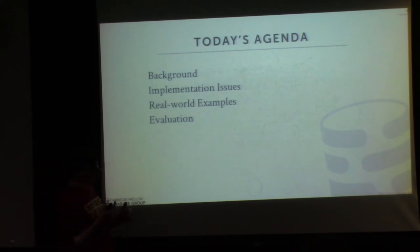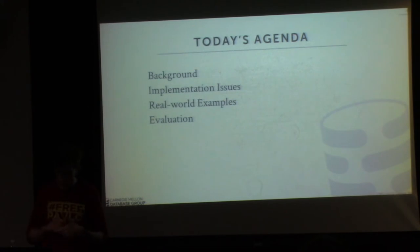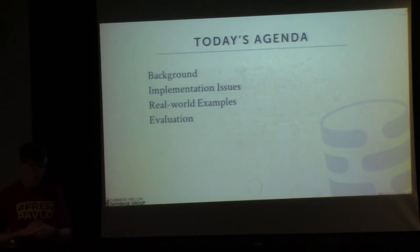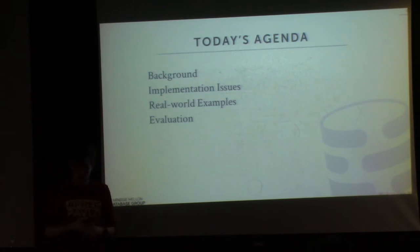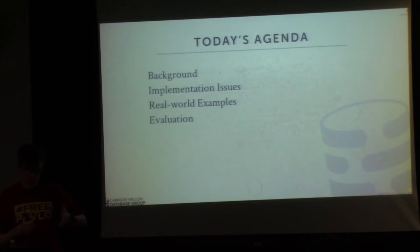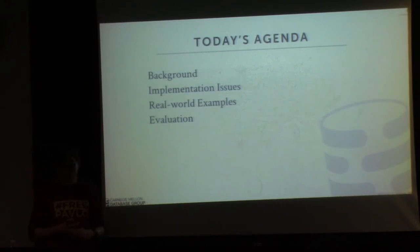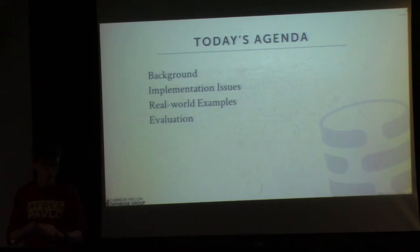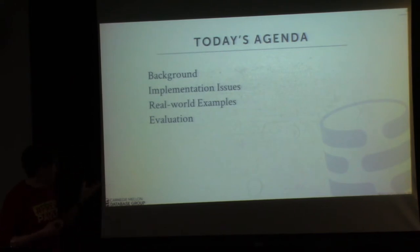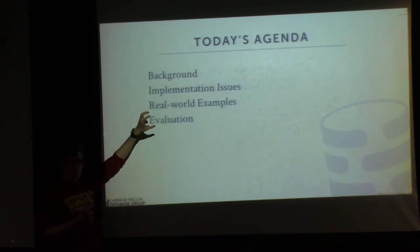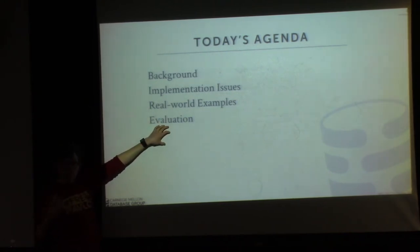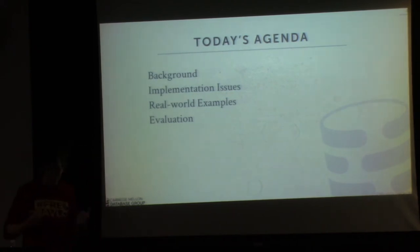I'll start with some background material about why this is a tricky problem, then talk about things you have to be mindful of when implementing support for on-disk data in an in-memory system. Then I'll walk through specific examples of how people have implemented this in real database systems. The paper you read was the anti-caching work we did — that's one of the examples we'll go through. We'll finish with an evaluation looking at different implementation issues run against different types of storage devices.